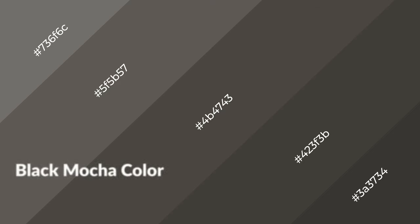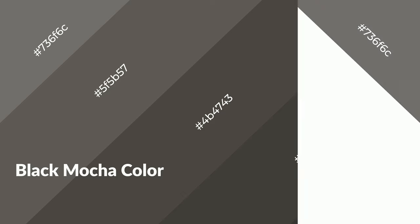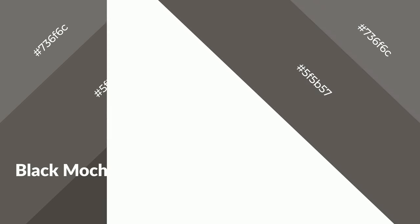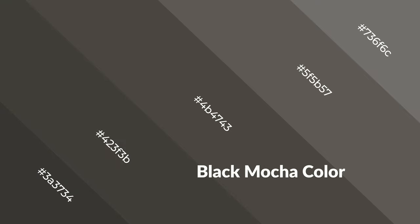Black mocha is a warm color and it emits cozier and active emotions. Warm colors are symbols of warmth, fire, heat, and sunshine. It also evokes joy, passion, love, and even anger emotions. You can see them used in restaurants and gyms.